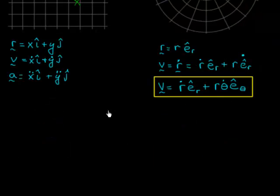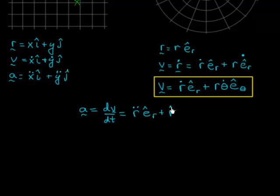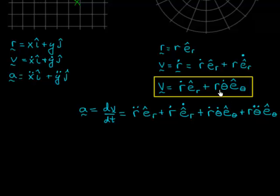Acceleration will have more complicated derivatives. Acceleration is the time derivative of velocity. Taking the derivative of the first piece gives r-double-dot in e-hat-r, plus r-dot times e-hat-r-dot. The next term has a triple product — r, theta-dot, and e-hat-theta — so we apply the product rule on each factor: r-dot times theta-dot times e-hat-theta, plus r times theta-double-dot times e-hat-theta, plus r times theta-dot times e-hat-theta-dot.